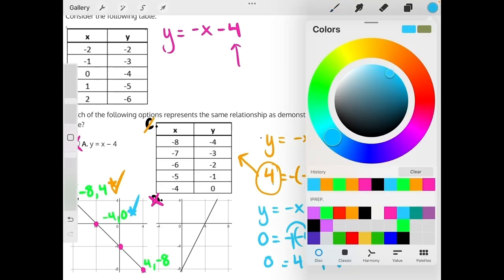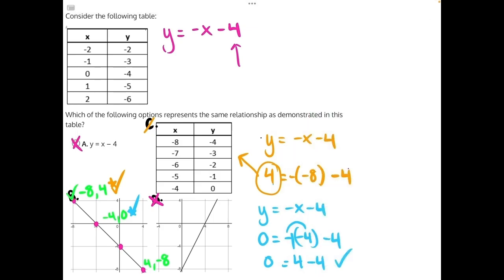And finally, we'll do the last point. Do it up here. y is equal to negative x minus 4, and we will have negative 8 as our y. We will have 4 as our x.